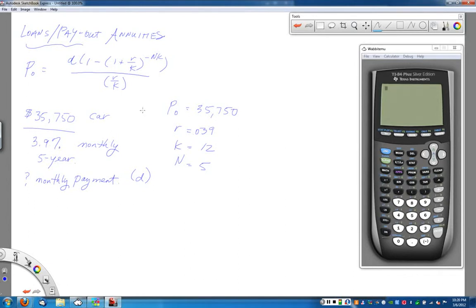So next thing that you do is looking at the original formula. Go ahead and plug in what you know. P-naught, or that starting amount, $35,750, is equal to D times parentheses 1 minus parentheses 1 plus R, which is 0.039, divided by K, which was 12.